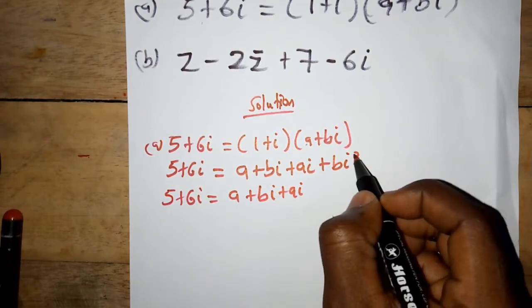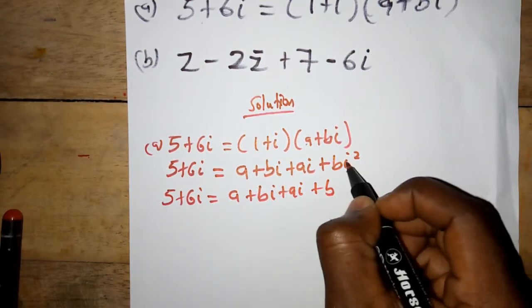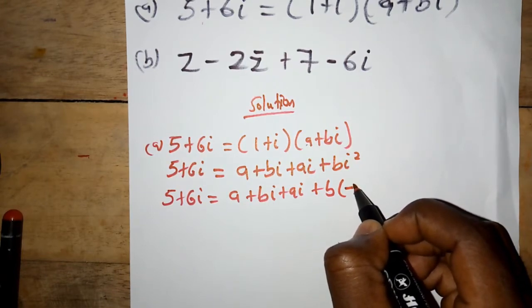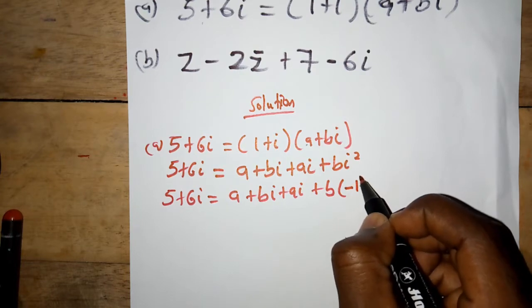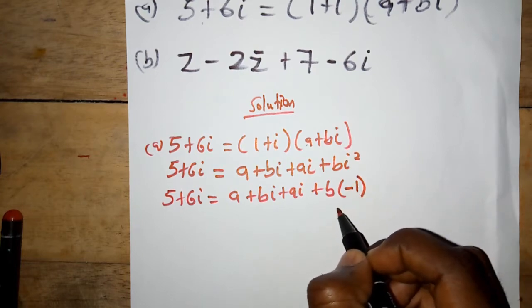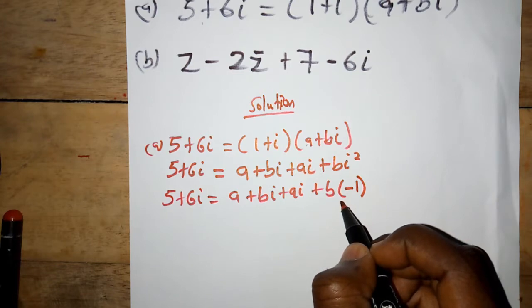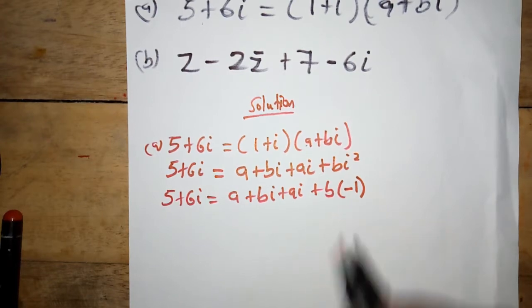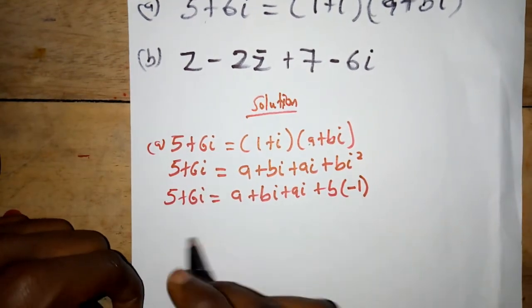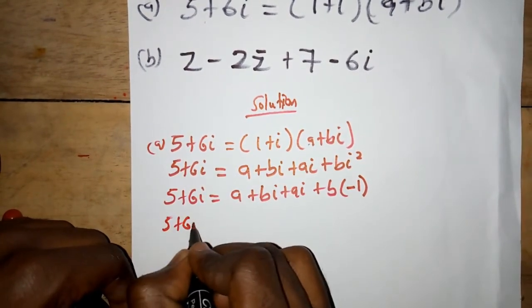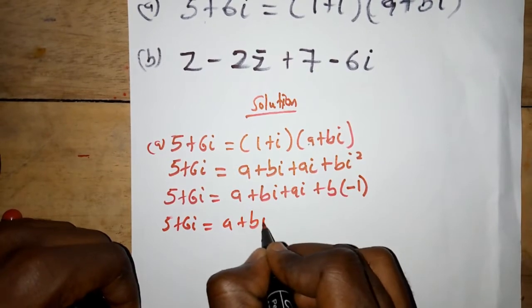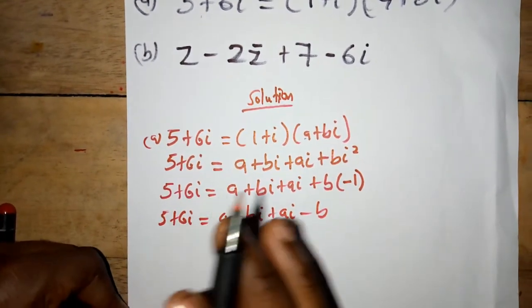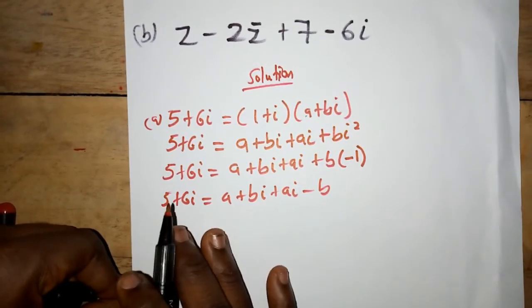Now we know i squared is negative one. So substituting that in, we have five plus six i being equal to a plus bi plus ai minus b.